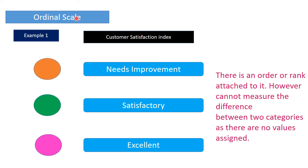We will see one example of ordinal scale — this is a customer satisfaction index. If you get orange it means you need improvement. If you get green it means it is satisfactory. And if you get purple it means you are in the excellent category. There are different groups and there is an order to them — purple is the best and orange is the least. Even though there is an order or ranking, we cannot measure the difference between orange and green, or between purple and green — you cannot say the difference between orange and green is equal to the difference between purple and green, because there are no values attached to it.